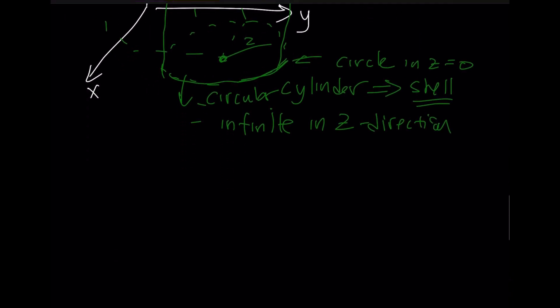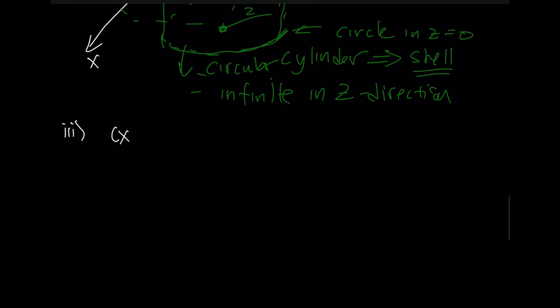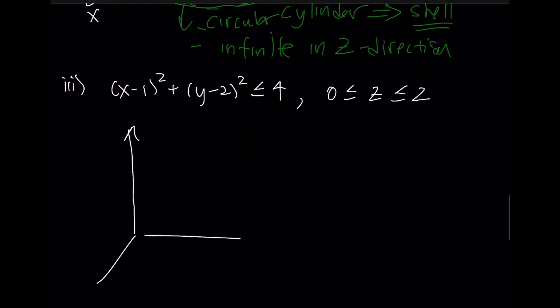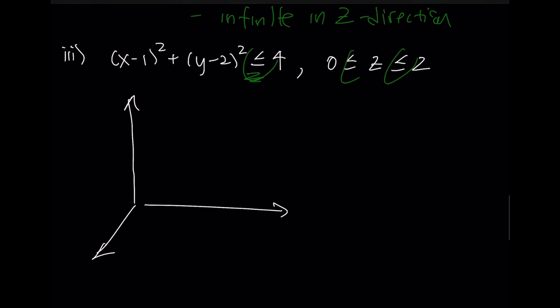If I were to add some more information, so for example, if I were to go x minus 1 squared, y minus 2 squared, less than or equal to 4, and I were to say z is between 0 and 2, so extending what we talked about before, this less than or equal to, these tell us that we are filling the surface. And what we would have again would be our cylinder, and this would be in the z equals 0 plane, and essentially our cylinder would go up until z equals 2, but it would be filled. And this would essentially be a solid cylinder, and it would be a circular cylinder.